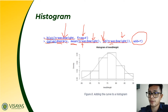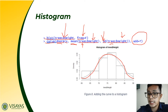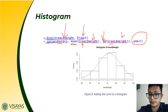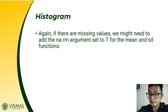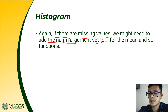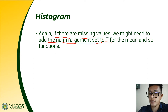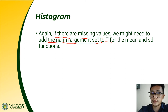When you press enter, it will display the histogram with its corresponding bell curve. We can see that the data more or less follows a normal distribution since the histogram displays a bell curve. If there are missing values, add the na.rm=T argument to the mean and sd functions, since missing values affect the mean and standard deviation.